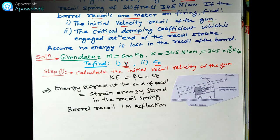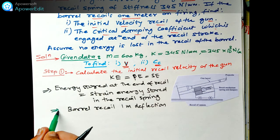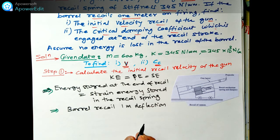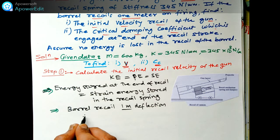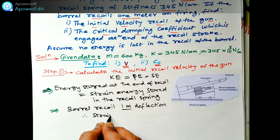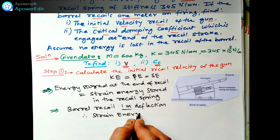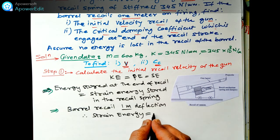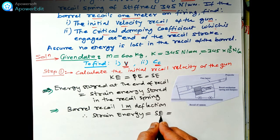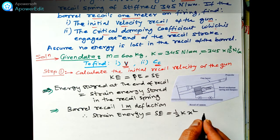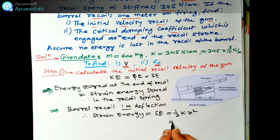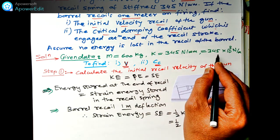So the given data is clear. Now for this one meter deflection, we are going to find how much strain energy is stored. The strain energy SE is equal to half k x squared.